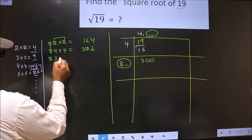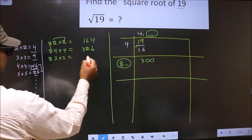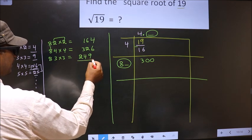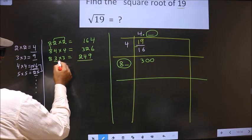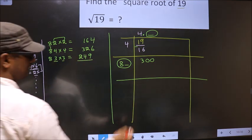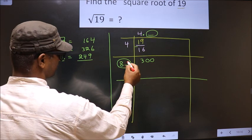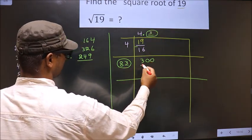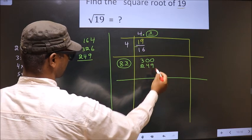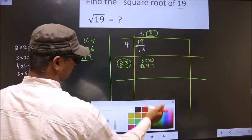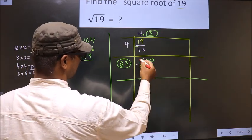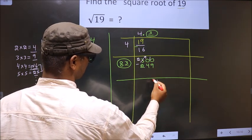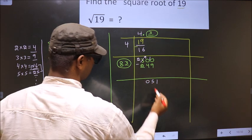So we should take 3. 83×3: 3×3=9, 3×8=24, so 83×3=249. We take 3 here and 3 here, giving 249. Now subtract: 300 minus 249. 10 minus 9=1, 9 minus 4=5, 2 minus 2=0. The remainder is 51.